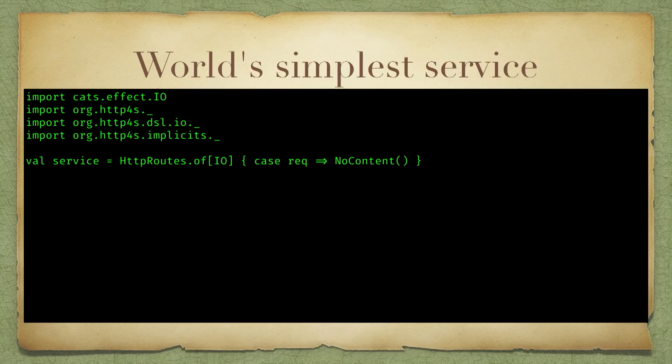In this case it's a case expression, reflecting the fact that we might want to do pattern matching on the request. It takes the request and returns — in this case — a response that the DSL we've imported lets us build from just a status. No Content is a status, 204 or something like that. But this is in fact a complete HTTP service.